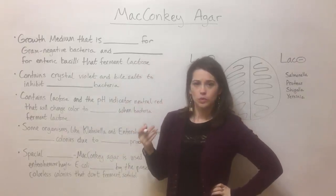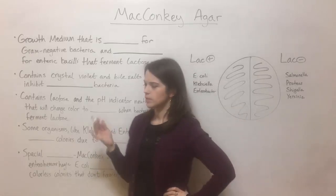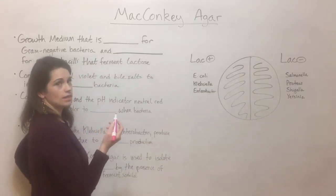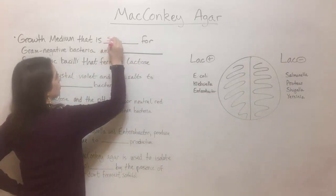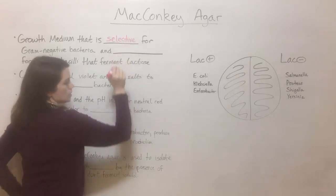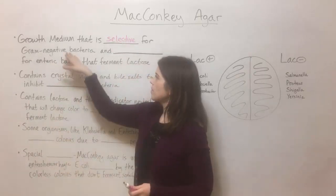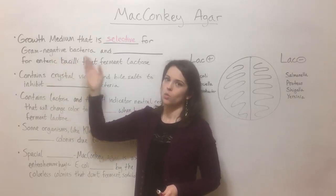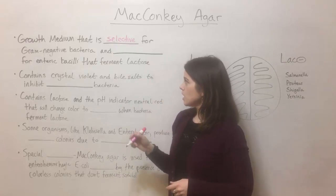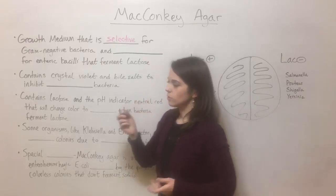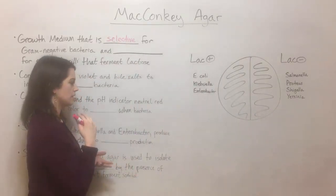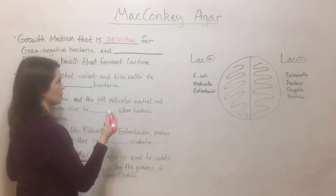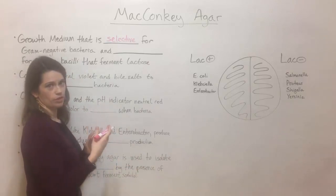MacConkey agar has some cool characteristics. It is a growth medium that is both selective and differential. It's selective specifically for gram-negative bacteria, meaning that it allows gram-negative bacteria to grow while preventing the growth of gram-positive bacteria. It is also differential, meaning that it allows one to distinguish between different types of bacteria based on some visual component.